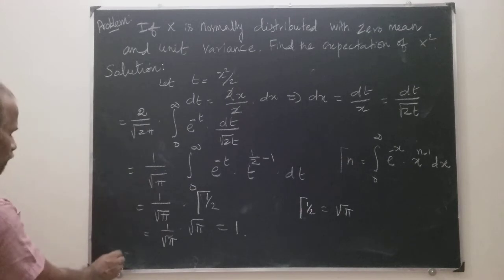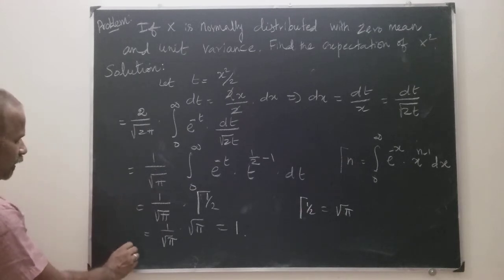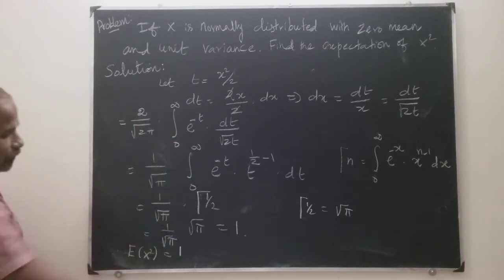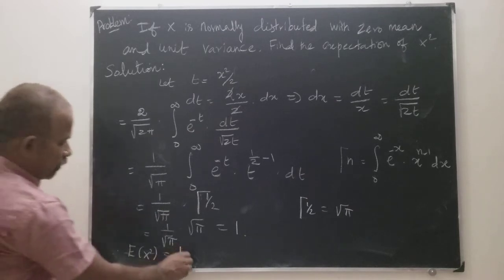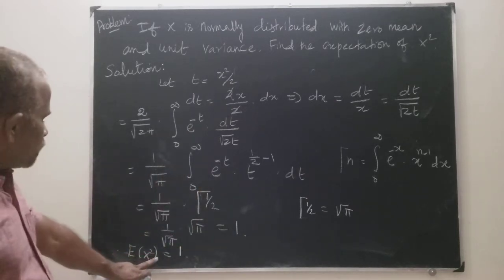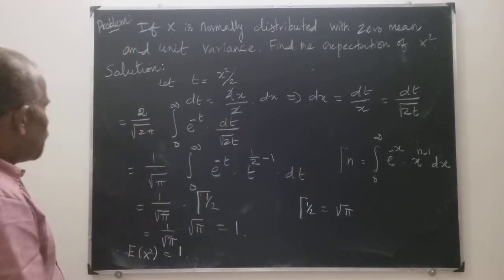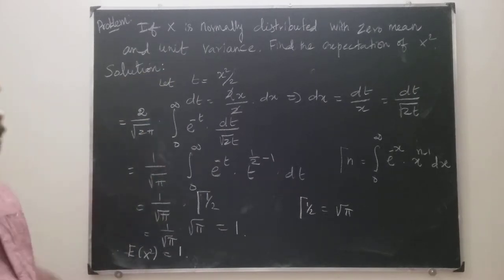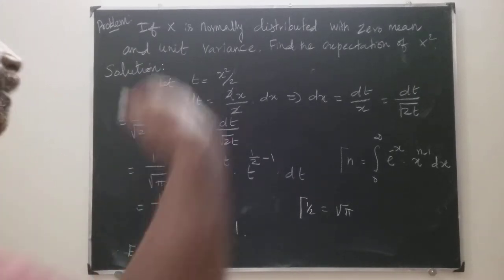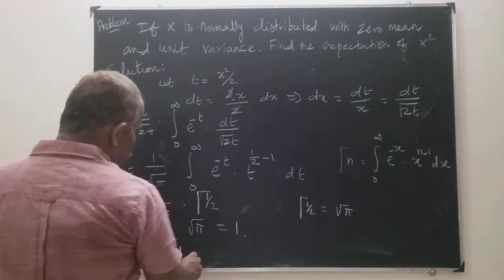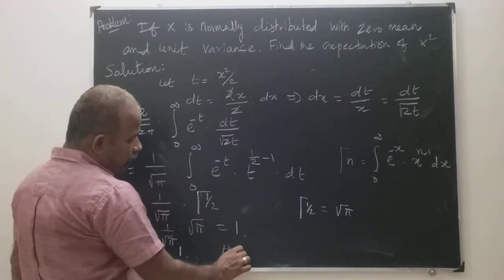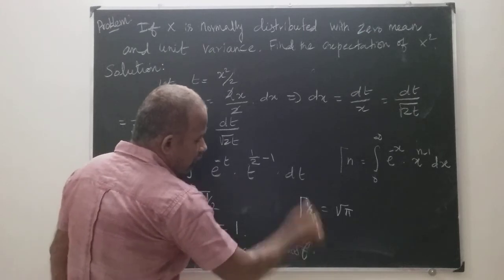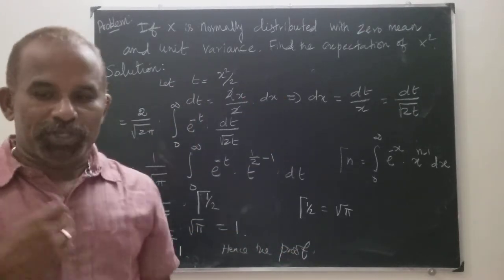Therefore, the expectation of x squared is equal to 1. This is true for a normal variable with mean 0 and variance 1. Hence the proof. Thank you very much.